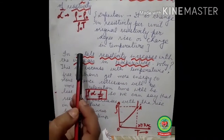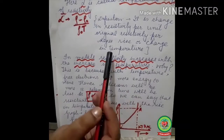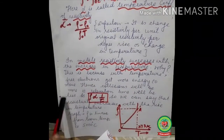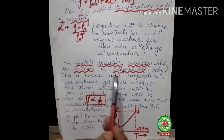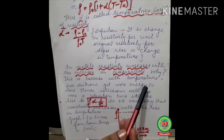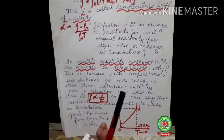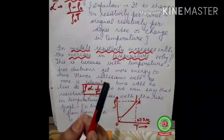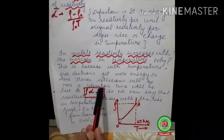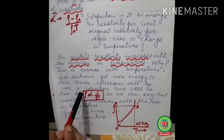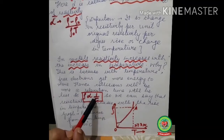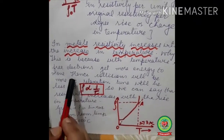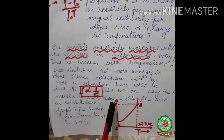In the case of metals, resistivity increases with the increase in temperature. The reason is: with increased temperature, free electrons gain more energy, causing them to move faster and collide more frequently with each other. This reduces the relaxation time (tau). Since resistivity is inversely proportional to relaxation time, a smaller tau means greater resistivity.